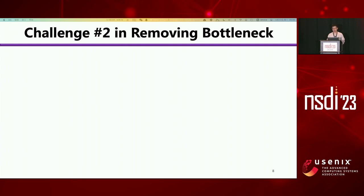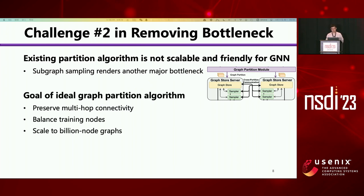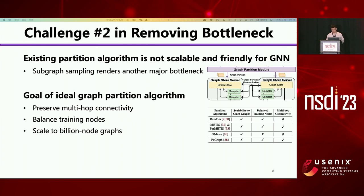Beyond node feature retrieving, the communication of subgraph sampling renders another bottleneck. We find existing partition algorithms are not scalable to billion-node graphs and not friendly to GNN models. The ideal graph partition for GNN models should meet three goals: first, preserve multi-hop connectivity for subgraph sampling; second, balance the training nodes between different partitions; and third, scale to billion-node graphs. The table shows that none of the existing algorithms meet all three goals simultaneously.